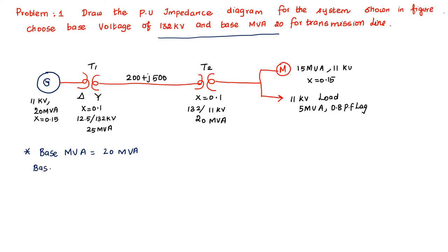First, I am going to find out the base kV for the generator and transformer 1. For the generator, it is connected to the low voltage side of transformer 1. The low voltage side is 12.5 kV, so the base kV of the generator is 12.5 kV and the base kV of transformer 1 is also 12.5 kV. The base MVA for the generator and transformer 1 is 20 MVA.